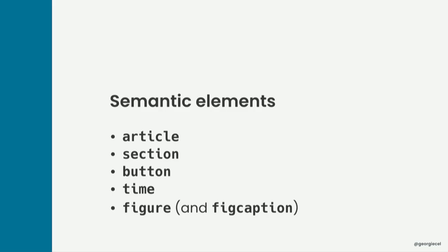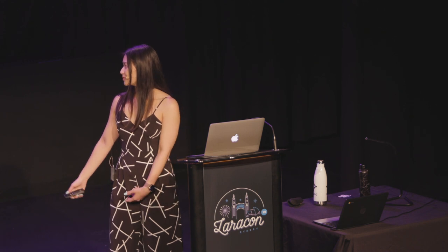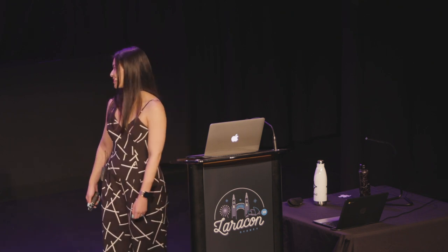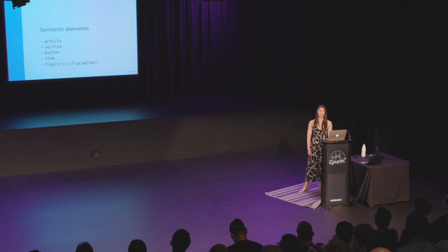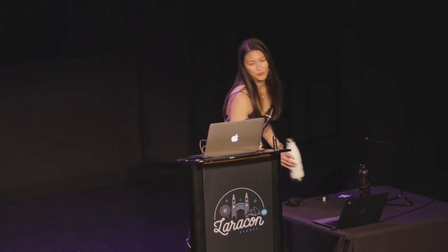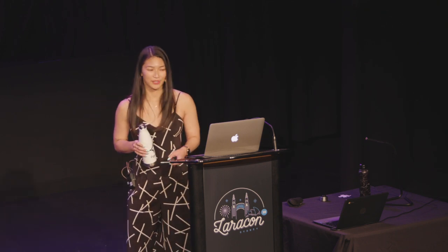There are some semantic elements we can use beyond the div, such as article for blog content, section for a distinct area of a website, footer, header, button where we used to use input previously, time for a specified time format, menu for a navigation menu of options, and figure and figcaption. These elements allow us to add meaning to the structure of our websites, making information easier for machines to process, and meaning that users using assistive technologies such as screen readers or navigating by keyboard will have a smoother experience.